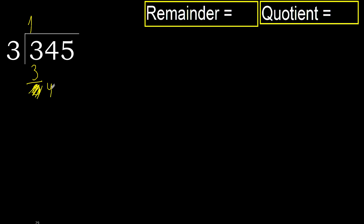4. 3 multiplied by 2 is 6, which is greater. 3 multiplied by 1 is 3, which is not greater. 4 minus 3 equals 1. Next.